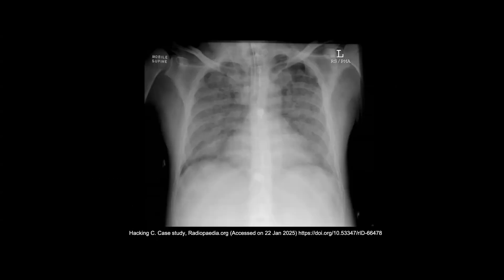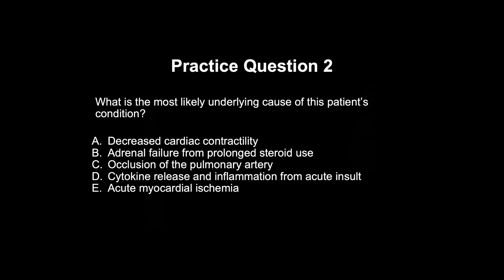A linked second question appears with the chest X-ray shown. The question asks: what is the most likely underlying cause of this patient's condition? Options: A — decreased cardiac contractility (heart failure); B — adrenal failure from prolonged steroid use; C — occlusion of pulmonary artery (PE); D — cytokine release and inflammation from acute insult; E — acute myocardial ischemia. Given the chest X-ray consistent with ARDS, the correct answer is D — cytokine release and inflammation from acute insult, consistent with ARDS in the setting of sepsis or other insult.